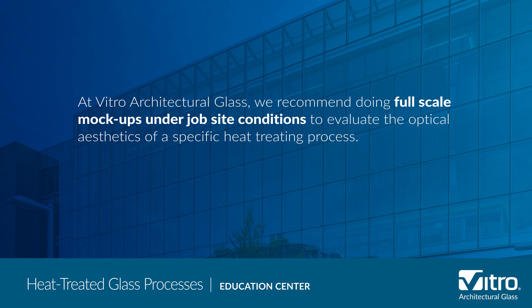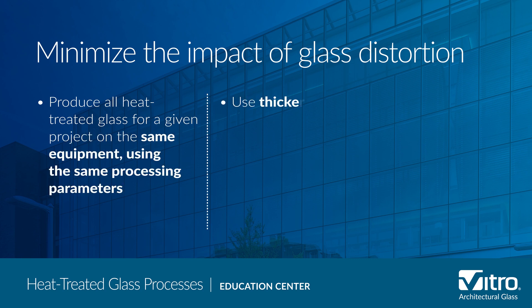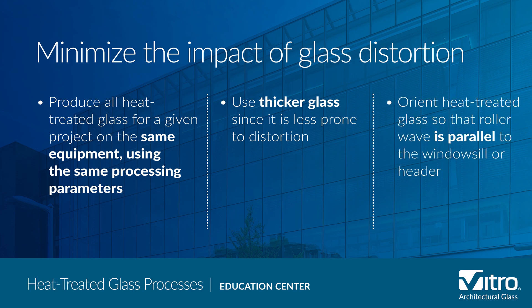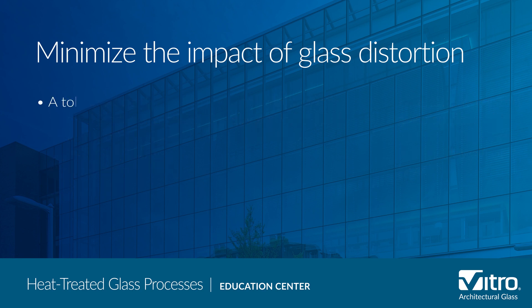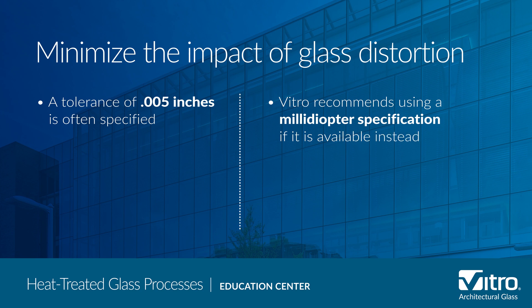At Vitro Architectural Glass, we recommend doing full-scale mock-ups under job site conditions to evaluate the optical aesthetics of a specific heat treating process. To minimize the potential impact of glass distortion: produce all heat treated glass for a given project on the same equipment using the same processing parameters; use thicker glass since it is less prone to distortion; orient heat treated glass so that the roller wave is parallel to the windowsill or header. While there is no industry standard to quantify permissible heat treated glass roller wave, a tolerance of five thousandths of an inch is often specified. Vitro recommends using a millidiopter specification if it is available instead.